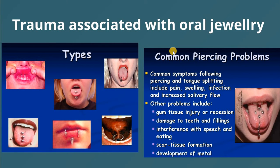We also have trauma from oral jewelry — for example, piercing jewelry in the lips or tongue, which has become more common recently among teenagers. Problems include pain, swelling, infection, increased salivary flow, gingival tissue injury or recession, damage to teeth and fillings, interference with speech and eating, scar tissue formation, and development of metal allergies.